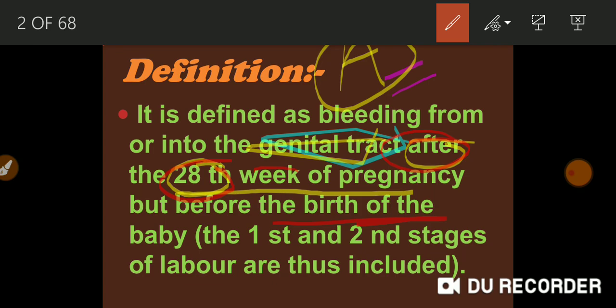Before the birth of the baby, the first and second stage of labour are thus included. Even in the first and second stage of labour, if there is bleeding in the genital tract of this type, it is a very concerned topic. You should be very aware — if there are complaints with this type of woman, there will be abnormalities and she is not normal to have a normal delivery. So this was all about the definition.